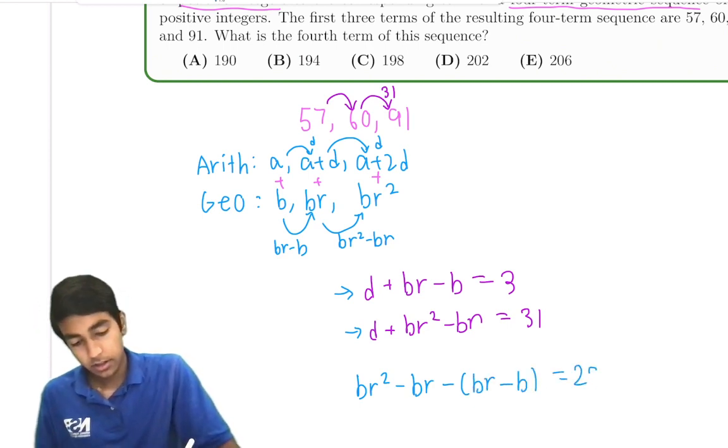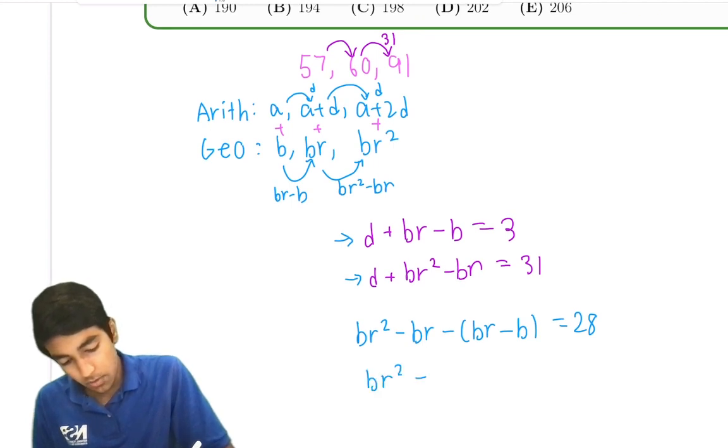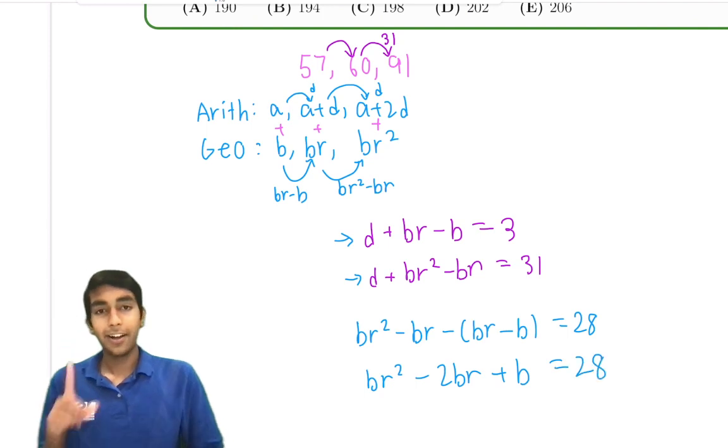Second equation minus first equation gives us br squared minus br minus br minus b is 31 minus 3, 28. Or br squared minus 2br plus b is 28.